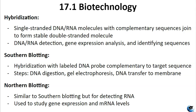Northern blotting is similar to southern blotting but it's used to detect specific RNA molecules. It involves separating RNA molecules based on size using gel electrophoresis, then transferring the RNA to a solid support — usually a membrane — and hybridizing the RNA with a labeled DNA or RNA probe that's complementary to the target RNA sequence. Northern blotting is commonly used to study gene expression and mRNA levels in biological samples.